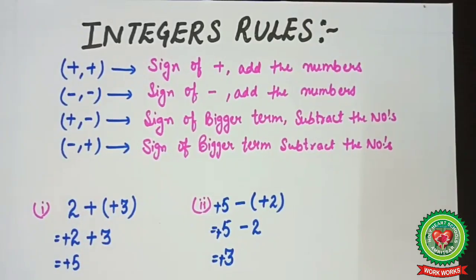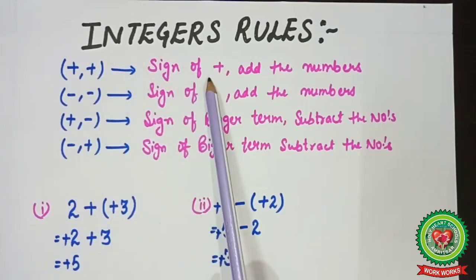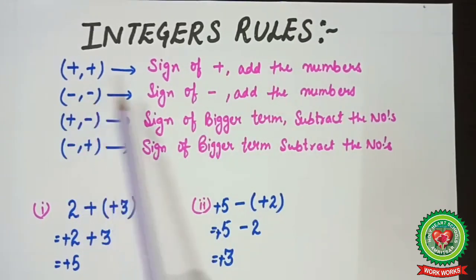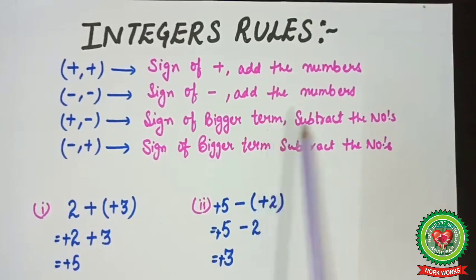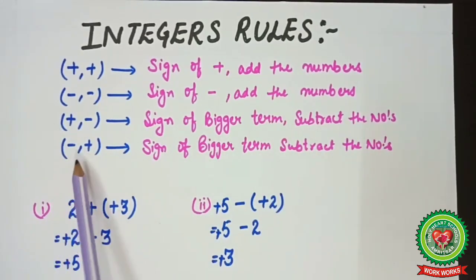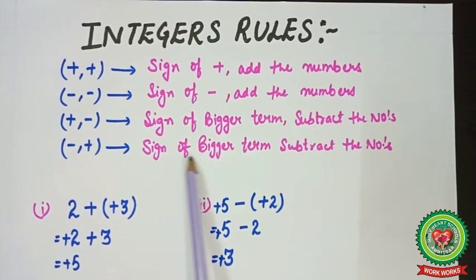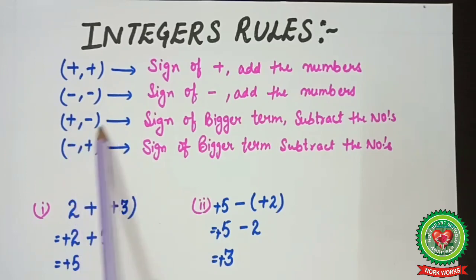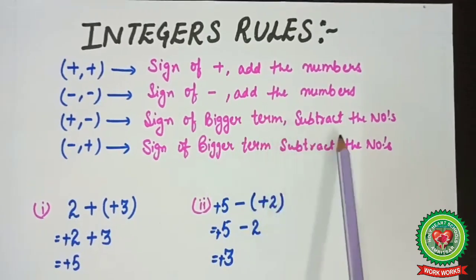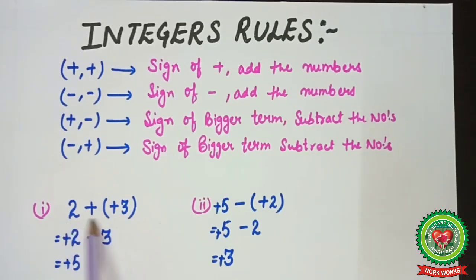Before starting the topic, we will quickly recall the integer sign rules from fifth and sixth standard. Rule one: plus plus — sign of plus, add the numbers. Rule two: minus minus — sign of minus, add the numbers. Rule three: plus minus — sign of bigger term, subtract the numbers. Rule four: minus plus — same as rule three, sign of bigger term, subtract the numbers.